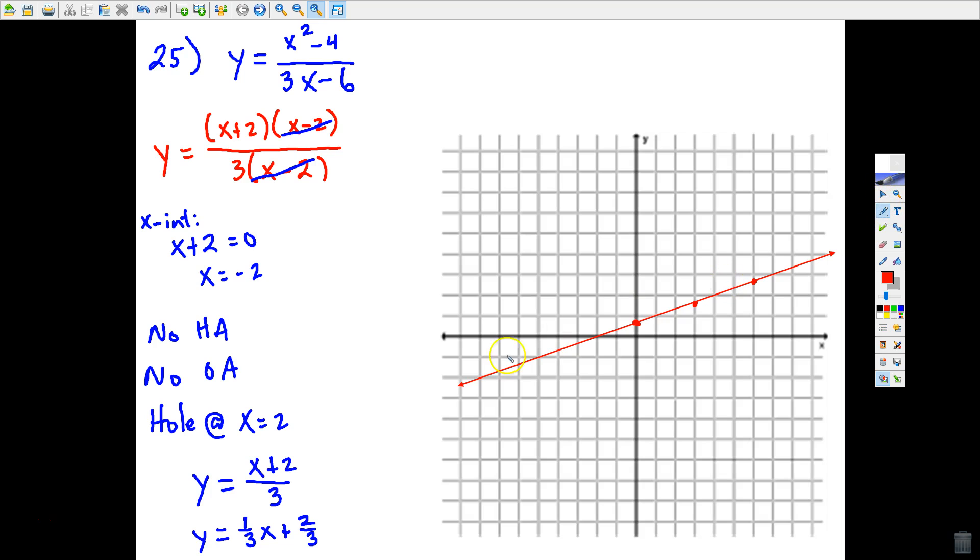Now don't forget, we're supposed to have a hole in the line because we cannot let x be 2. We cannot do an input of 2 into this function because that would give us denominator 0. So let's identify where x equals 2 on this particular line. If you're not sure, just trace the x-axis to where you find x equals 2, and then find your line at that point, and then just draw a circle.